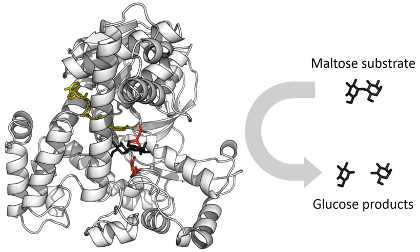Enzymes must bind their substrates before they can catalyze any chemical reaction. Enzymes are usually very specific as to what substrates they bind and the chemical reaction catalyzed. Specificity is achieved by binding pockets with complementary shape, charge and hydrophilic/hydrophobic characteristics to the substrates. Enzymes can therefore distinguish between very similar substrate molecules to be chemoselective, regioselective and stereospecific. Some of the enzymes showing the highest specificity and accuracy are involved in the copying and expression of the genome, and some of these enzymes have proofreading mechanisms.